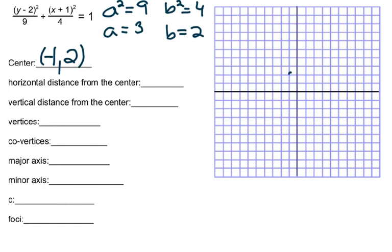So if we plot that — negative 1, up 2 — there goes the center of our ellipse. Now the question is: what's the horizontal distance from this center? The horizontal distance is the value going left and right, so the square root of the number underneath the x. In this case it's going to be 2 — it's going to be b. Now your vertical distance: the number underneath y, you take the square root and we've got 3 from the center. Your vertices — the horizontal distance is 2, so we're going to go over 2 to the right, over 2 to the left. And our vertical distance is up 1, 2, 3 and down 1, 2, 3.